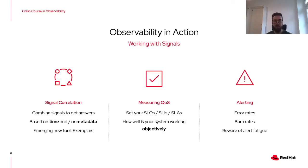To further improve our ability to answer more complex questions about our systems, we need to correlate various signals. We can correlate signals by time of occurrence of a particular event, or by using signal metadata such as a request ID, which can help us pair a particular log line to a given trace. An interesting emerging tool in this space are exemplars, which tightly couple a metric or log with traces and make it easy to jump between the two signals in a UI.